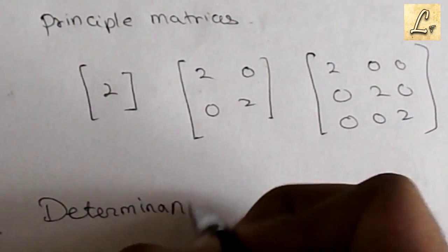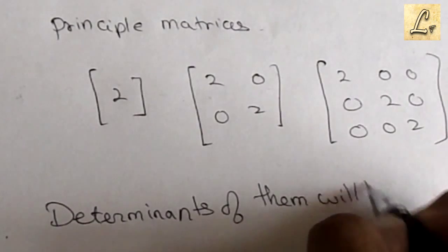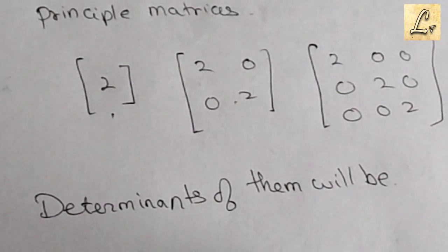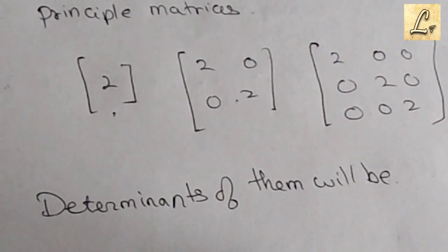We'll take the determinants of all three, which gives us 2, 4, and 8.